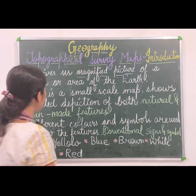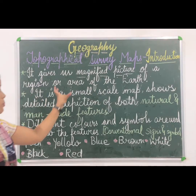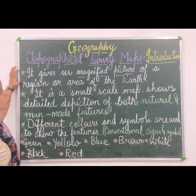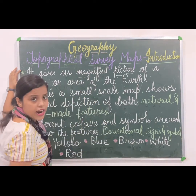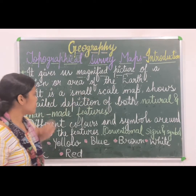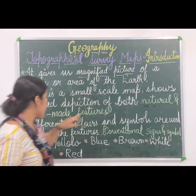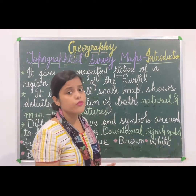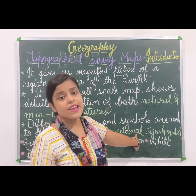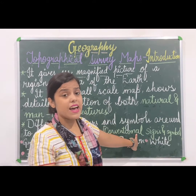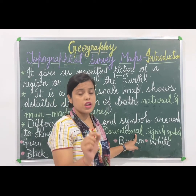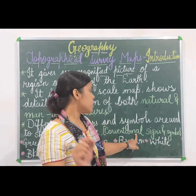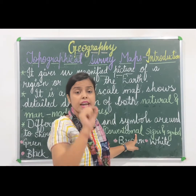Let us revise the main highlighted points. The first point is that a topographical map shows us a magnified picture. It is a small scale map. It shows both natural and man-made features. It uses certain colors, signs, and symbols known as conventional signs and symbols, which act as storehouses of information. These are accepted internationally.